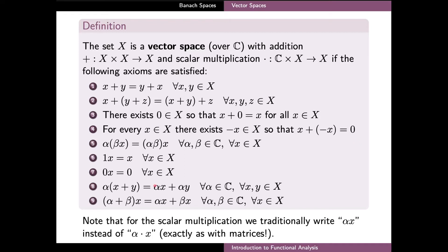And finally, axioms 6 and 7 tell us how the multiplication with scalars 0 and 1 affect the vector. In particular, the multiplication of any vector with the zero scalar should produce the zero element. So here in axiom 7, on the left, the zero symbol is the scalar complex number 0, and on the right, this is the zero element of the vector space.